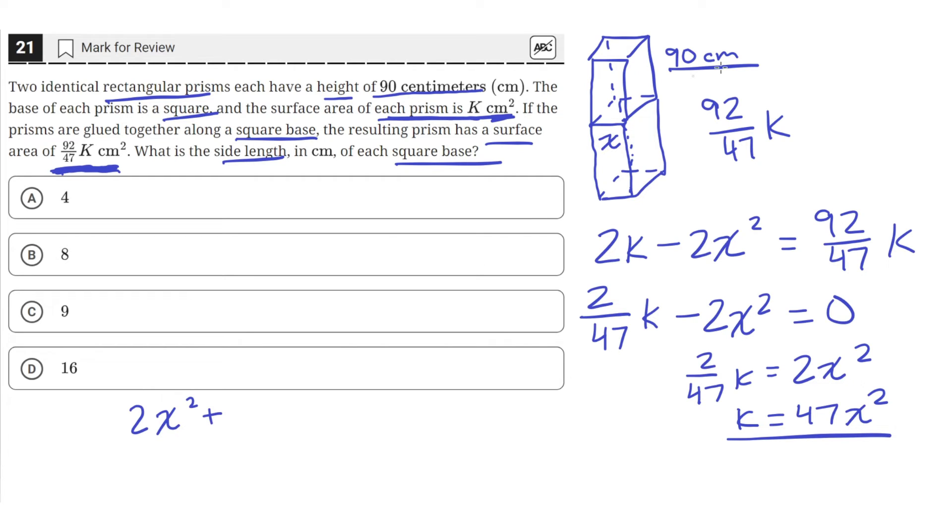Then we'll add it with the area of one face, one of those rectangular faces. The area is 90 times x. But we have four of these on a rectangle, so we'll multiply this by 4. So that's the surface area of one rectangular prism. And that equals k, since we were given that the surface area of each prism is k.